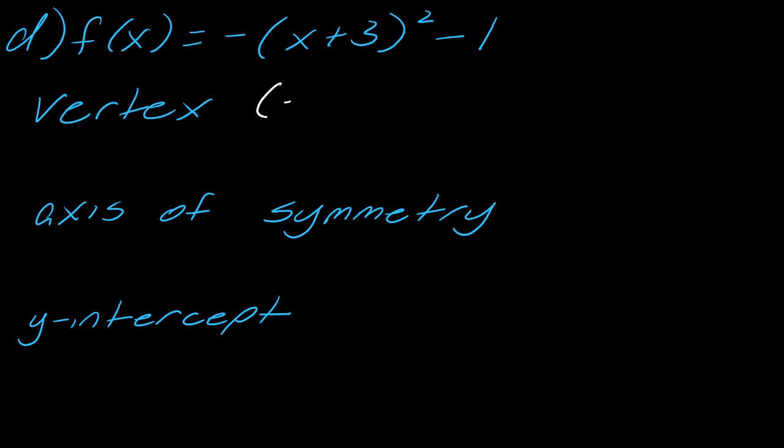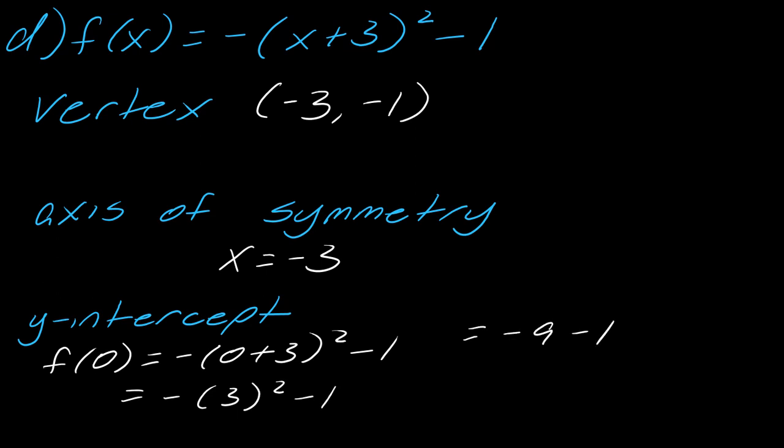So in this case, this is (-3, -1) for my vertex. x = -3 for my axis of symmetry. And then if I evaluate my f(0), if I work through all this, let's see, be really careful with this negative here. This gives me actually -9 - 1, so this equals -10. So this is (0, -10) is my y-intercept.